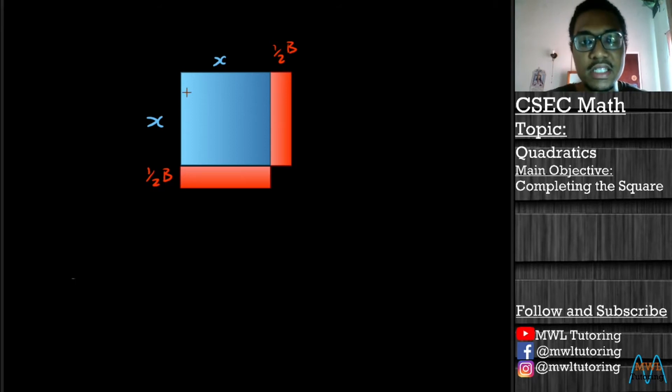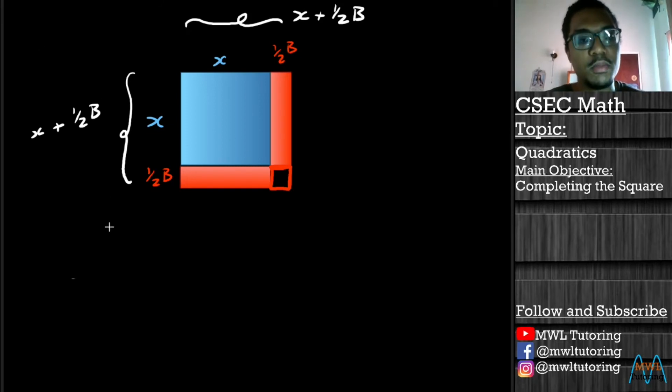And if we look at what we have here, we have essentially a square. It's just this one little piece here that is missing. But we have a square. And what we could now do is we could find the area of this square. And the area of this square would be the length, which is x plus one half B on this side here. And because it's a square, it's going to be the same length here, x plus one half B. And we're going to square this to find the area of the square. So the area here will be (x + ½B)².